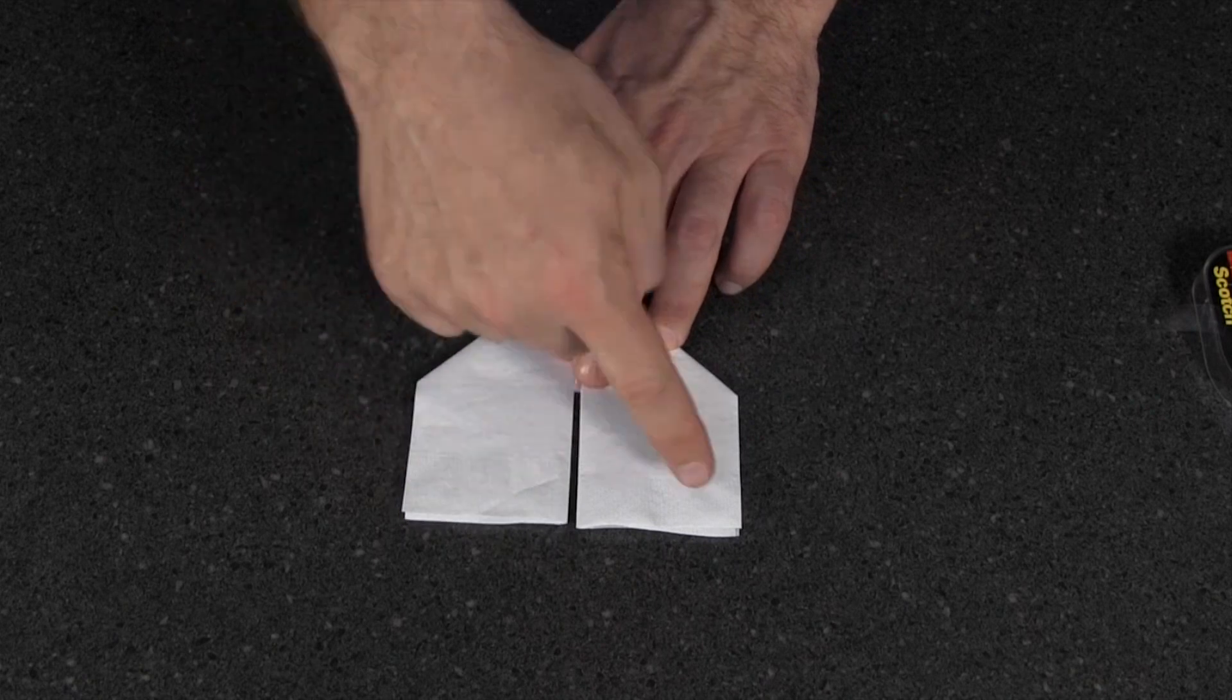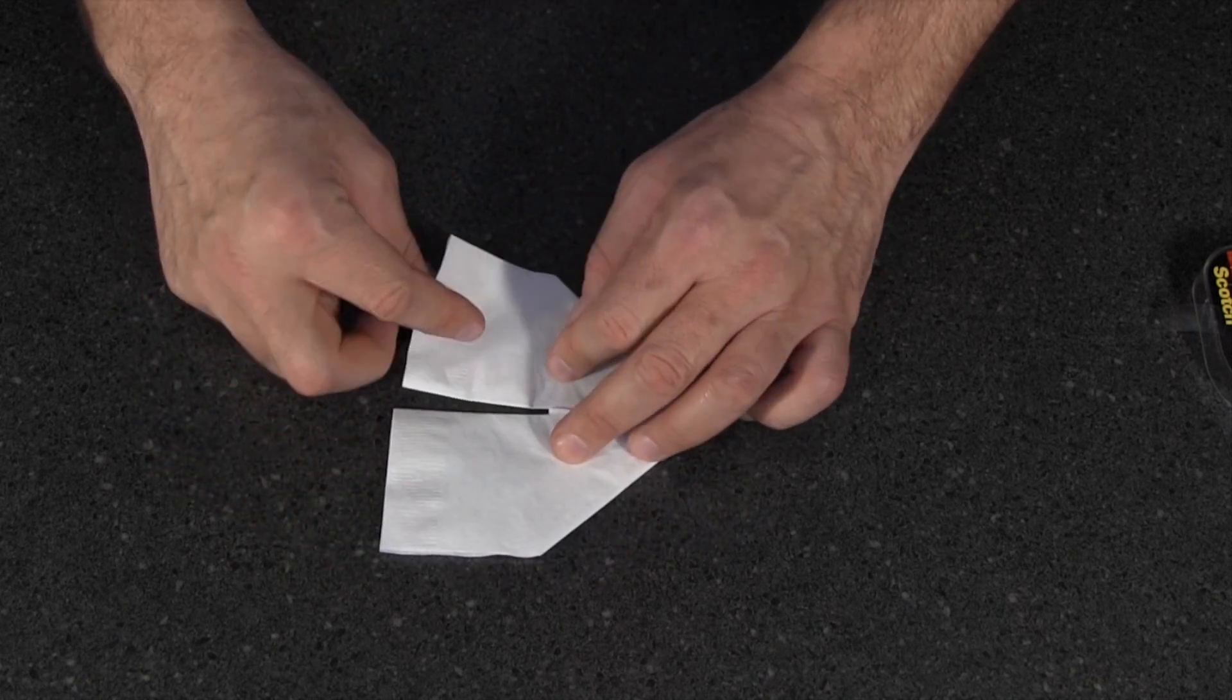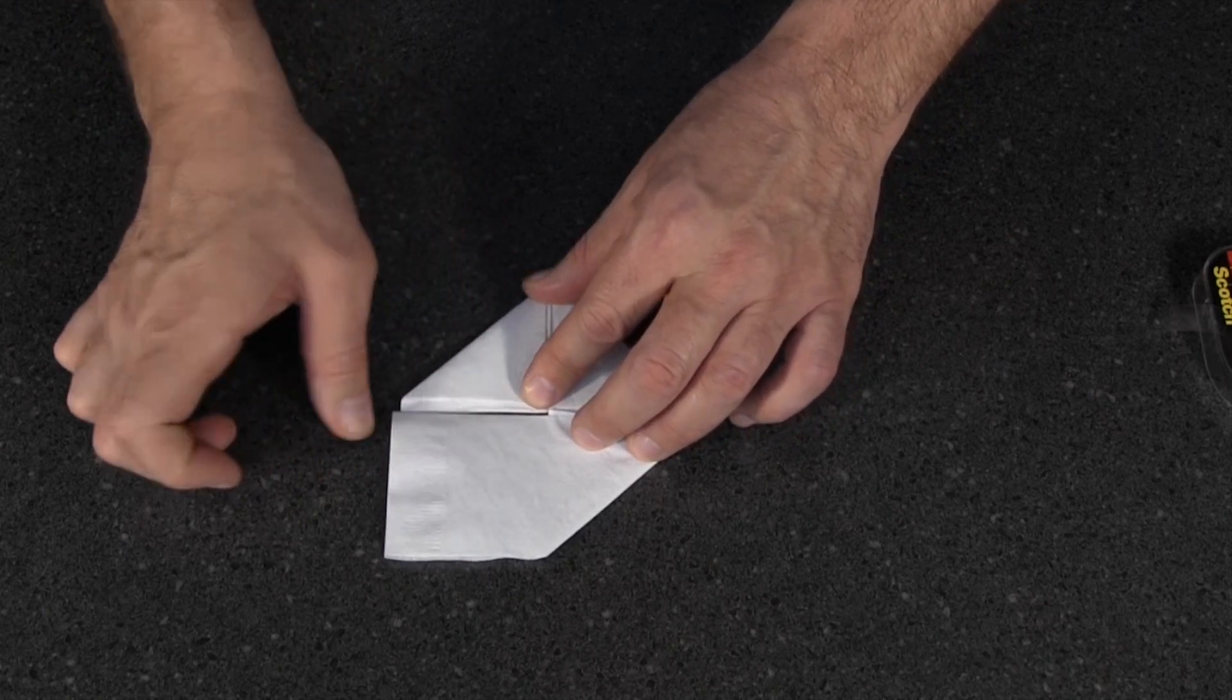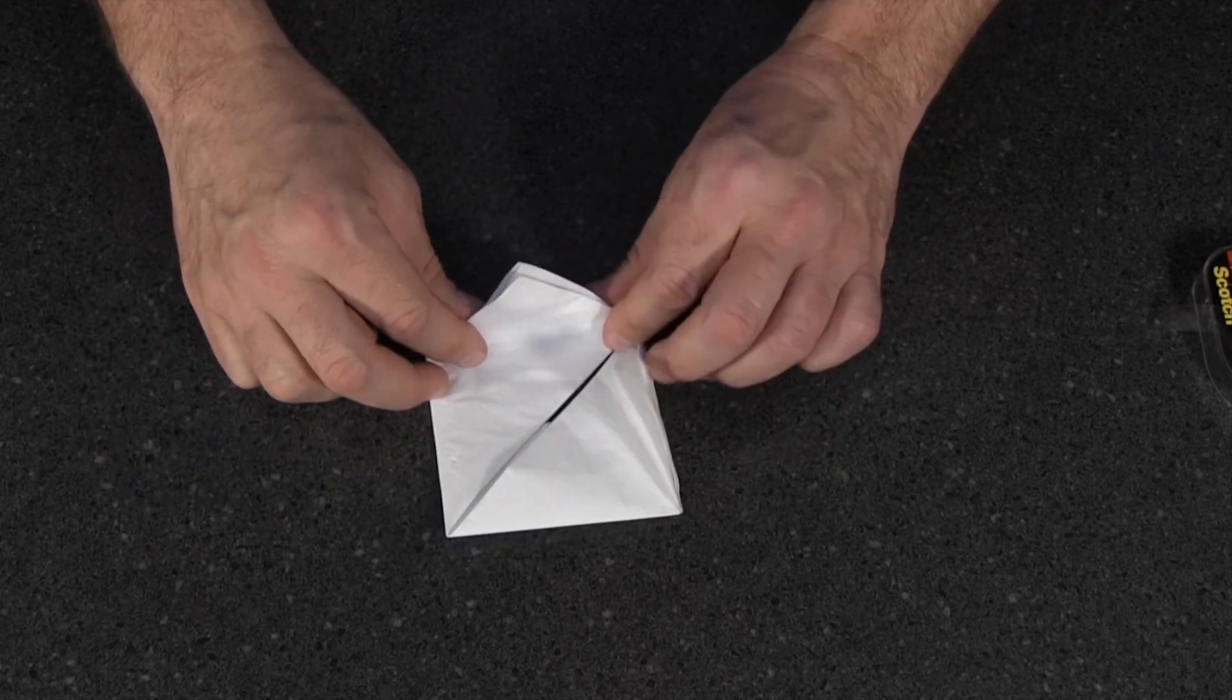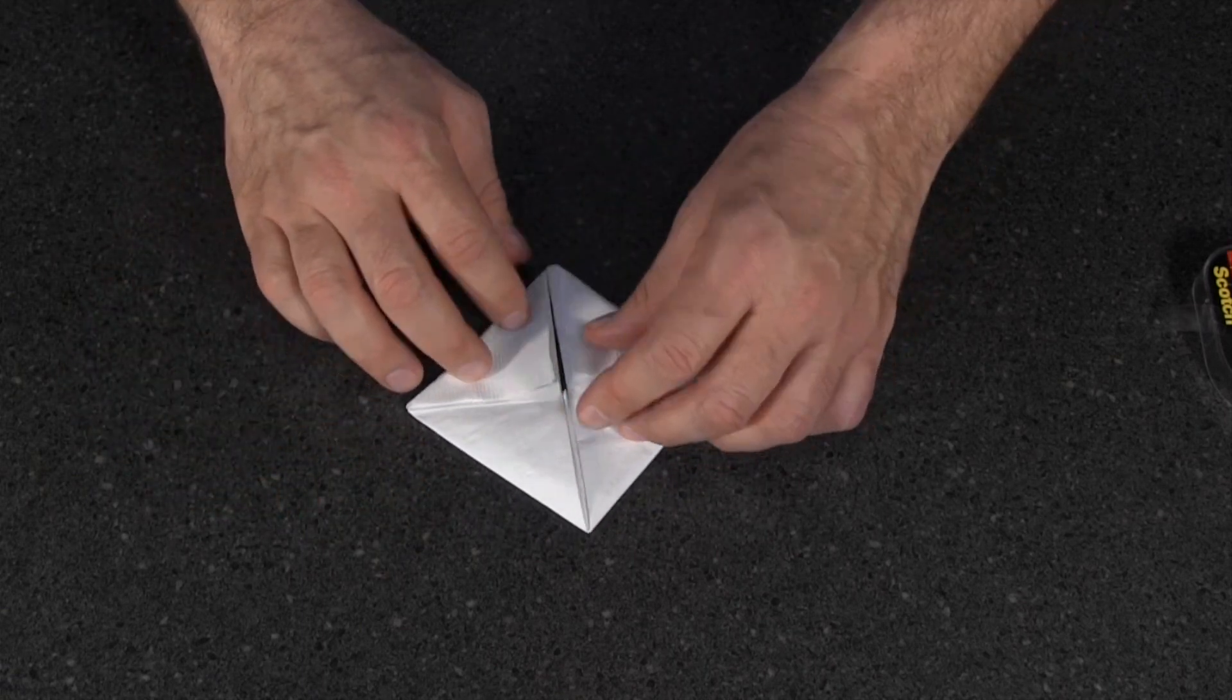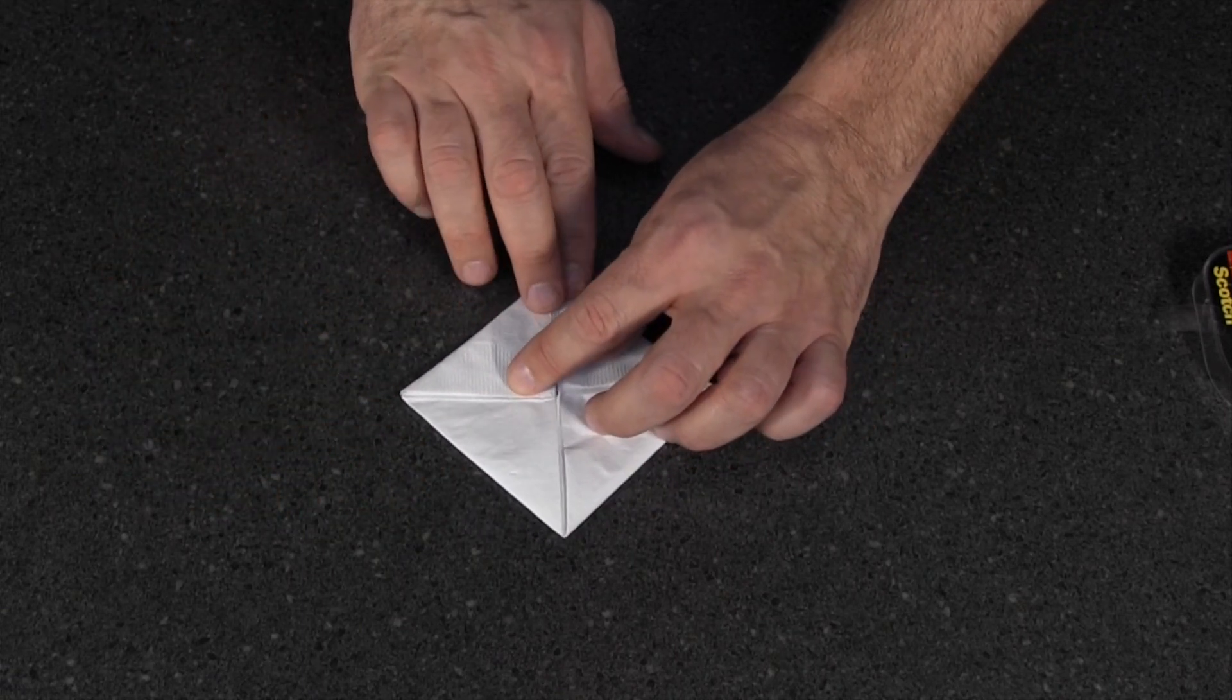Now you're going to take these two corners and bring them up. Crease that, and bring this up, and crease that. So now you have a square, right?